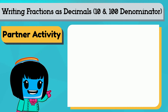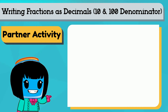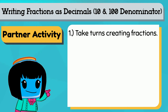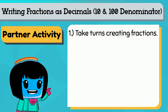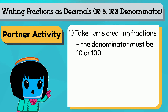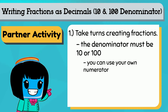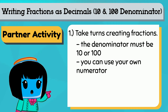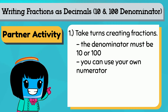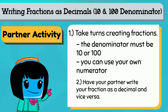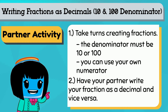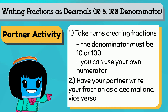You can do this with a partner. Take turns creating fractions with a denominator of 10 or 100, then add your own numerator. Next, your partner can write the fraction as a decimal. Then it's your turn.